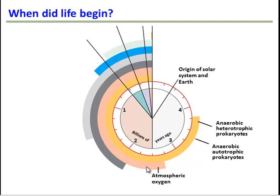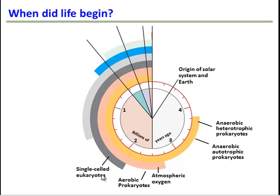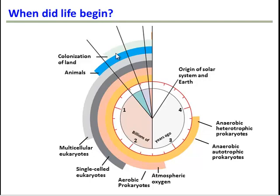Atmospheric oxygen appeared somewhere between 2 and 3 billion years ago, and around the same time we had aerobic prokaryotes — living things that use oxygen to survive. This is about the time of the oxygen revolution, in which many anaerobic organisms went extinct and the aerobic organisms took over. From there, we got single-celled eukaryotes about 2 billion years ago, and multicellular eukaryotes about 1.5 billion years ago. Less than a billion years ago, animals finally emerged in the water, followed by animals on land, and then humans evolved.